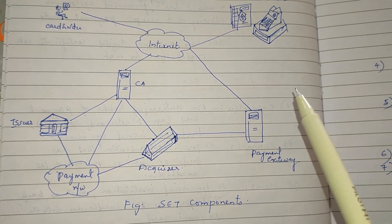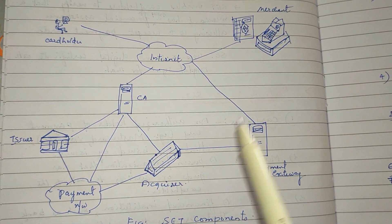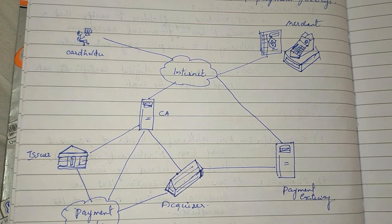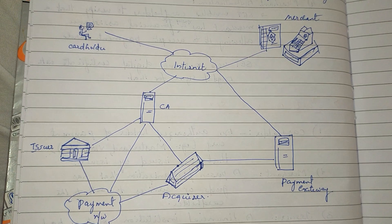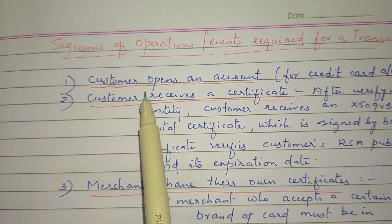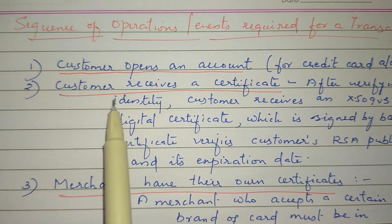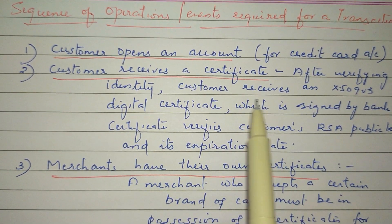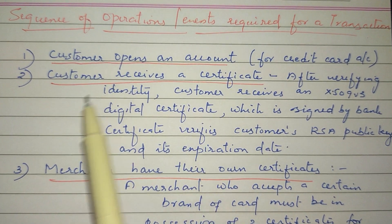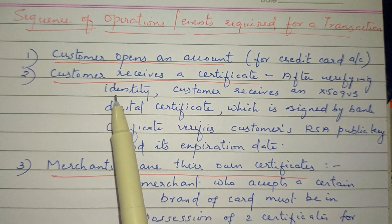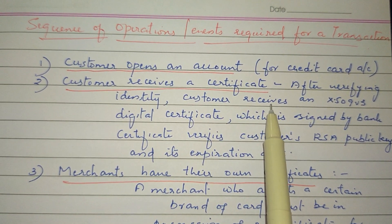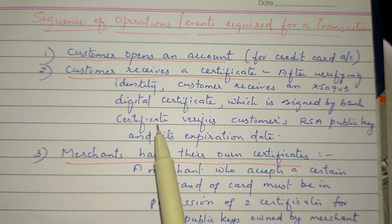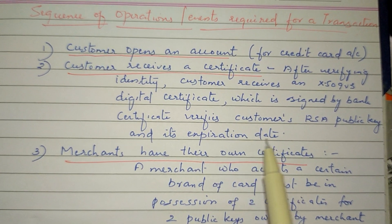SET components: SET participants and SET components. Now, where are the transactions? The sequence of events is as follows. The customer has an account opened. If you have a customer, you will receive a certificate — that is, customer identity is verified. The customer has a digital certificate. That certificate is signed in the name of the bank. After verifying the identity, the customer receives a digital certificate, which is an X.509 v3 digital certificate signed by the bank.